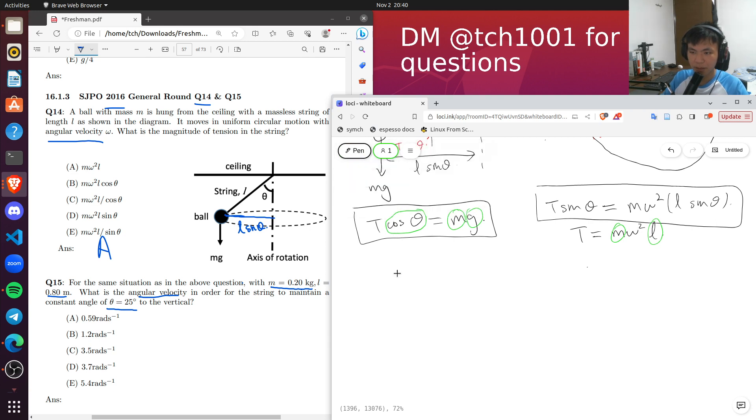Okay, so from here, we know that T equals to mg over cosine theta.